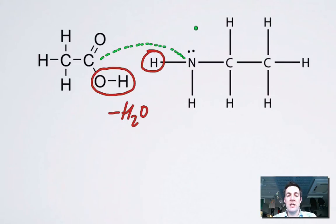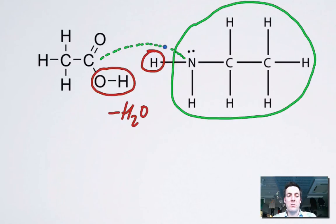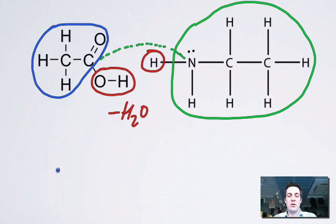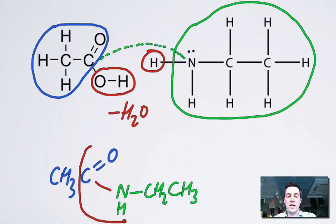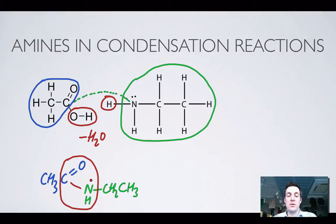If I colour-code the amine green and the carboxylic acid blue, the amide we make looks like: CH3, C double bond O, then a new bond to NH, CH2, CH3. You don't have to name this amide, but it's important to spot the amide group. An amide looks like an ester except instead of having an O, it's got an NH — the two molecules are joined via a nitrogen instead of via an oxygen, because we've used an amine rather than an alcohol.